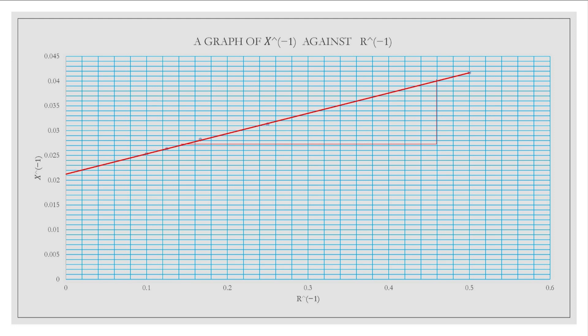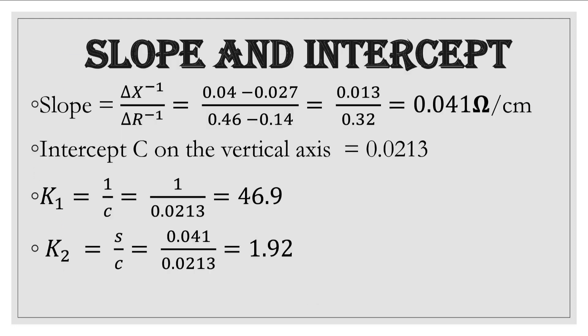If we try to deduce the slope from this particular graph you will notice that since we plotted inverse of X against inverse of R, our slope equation is going to be the change in inverse of X over the change in inverse of R. By the time we take note of our highest and our lowest points and substitute them accordingly, our slope value is 0.041 ohm per cm.